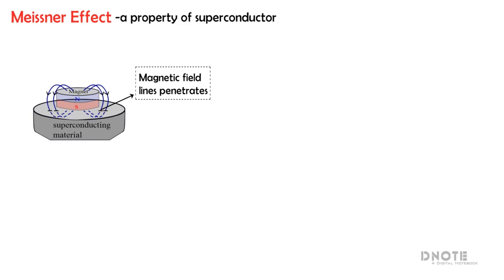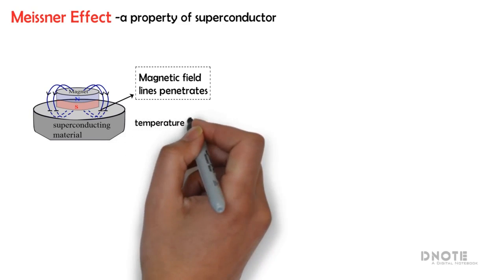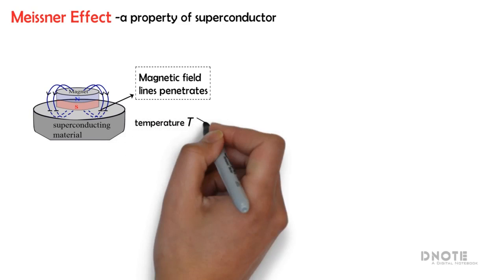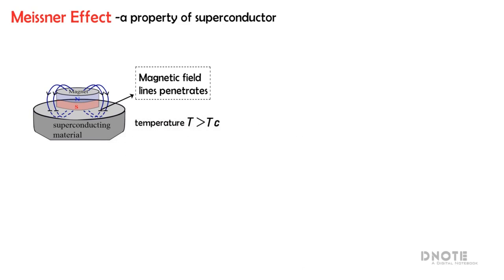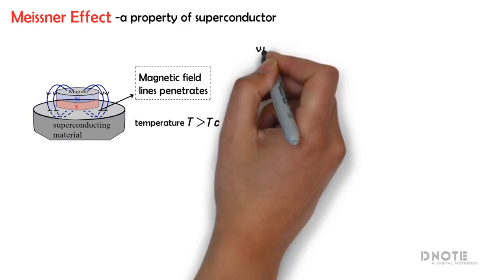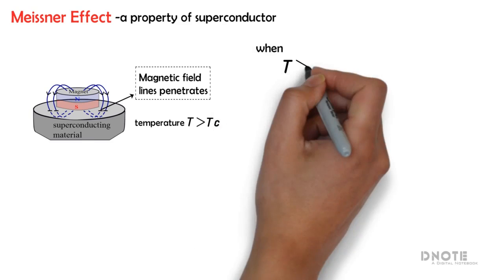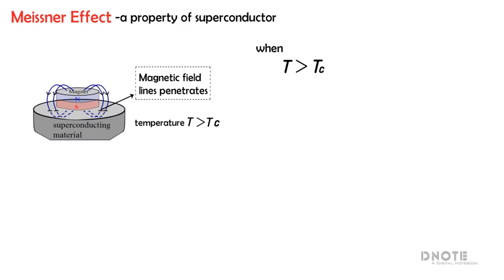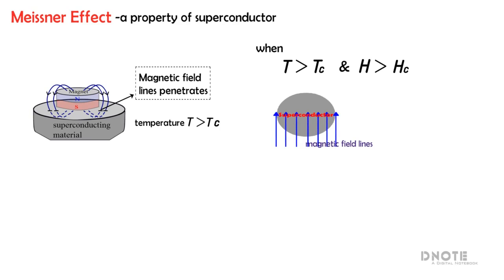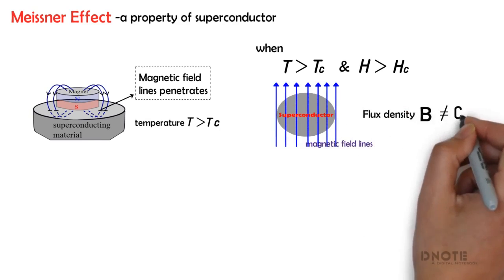This continues as long as the temperature T of the superconducting material is above the critical temperature Tc. That is, when the temperature of the superconducting material is greater than the critical temperature, and the field is greater than the critical magnetic field, the magnetic field lines penetrate the material. Here, the flux density B is not equal to zero.